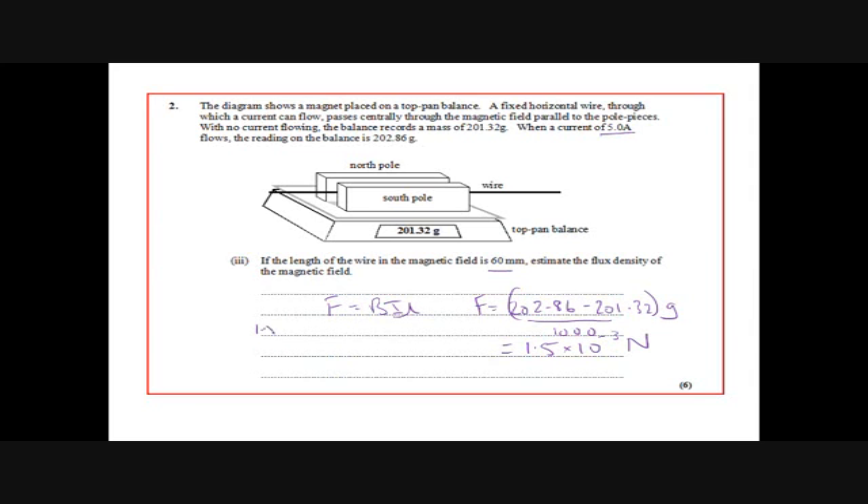If you do all that, then you'll find that you get the weight to be near enough 1.54 times 10 to minus 3 newtons. So then we can go back to this equation and I've got 1.54 times 10 to minus 3 and divide that by the current, which is 5, times the length, which is 60 times 10 to minus 3. Then that gives us a flux density of 0.05 tesla.